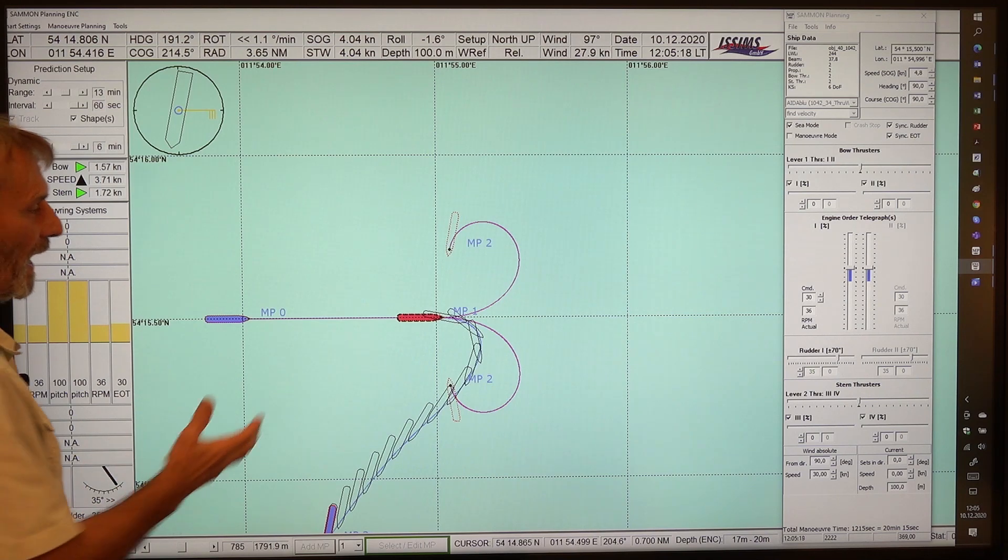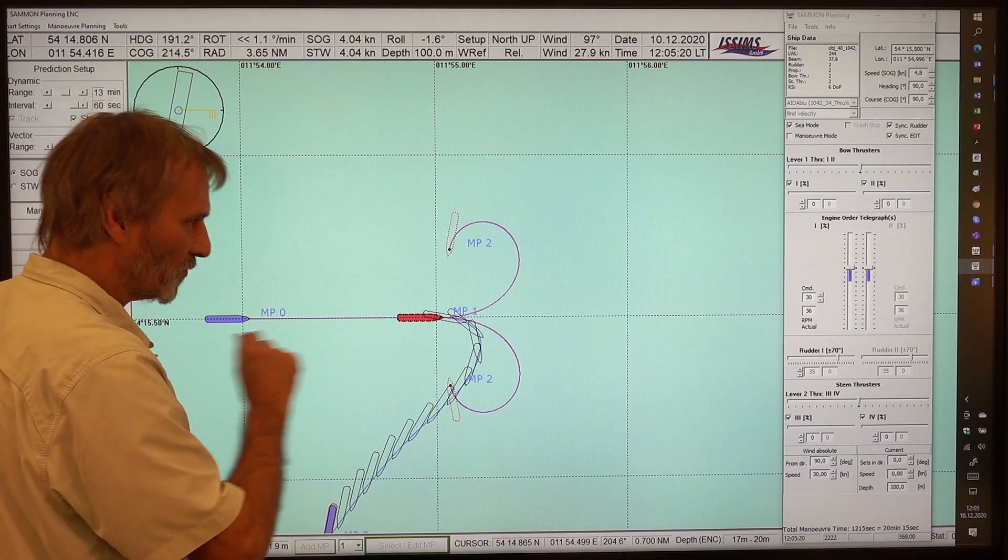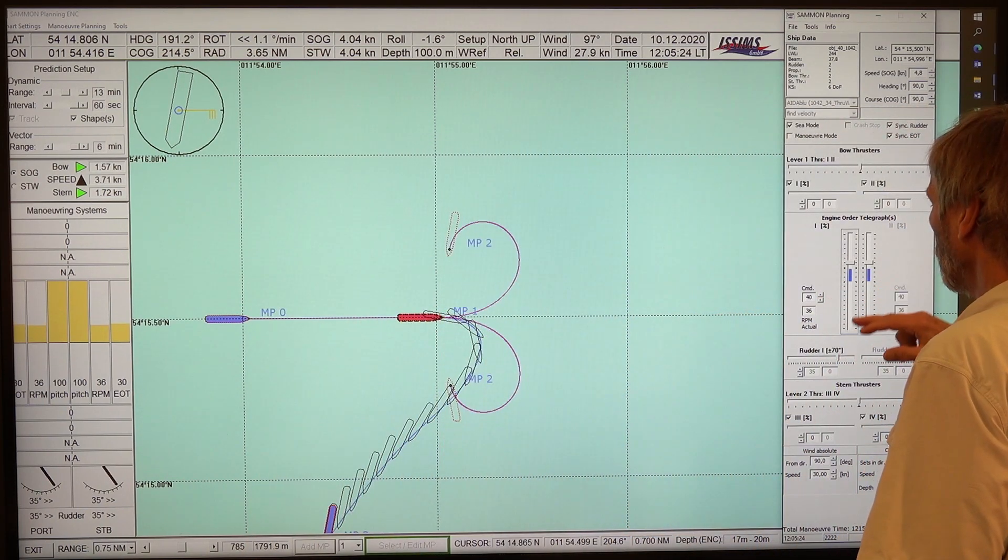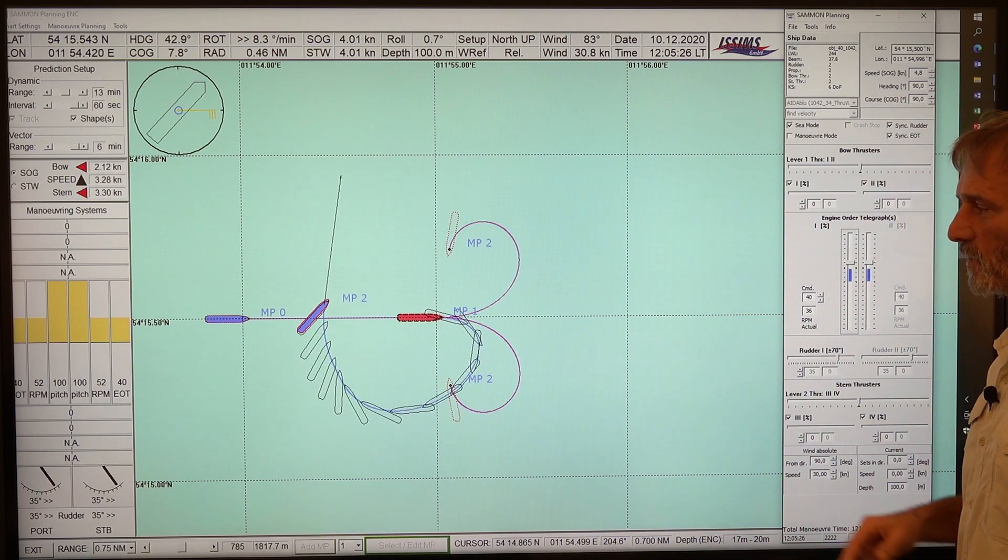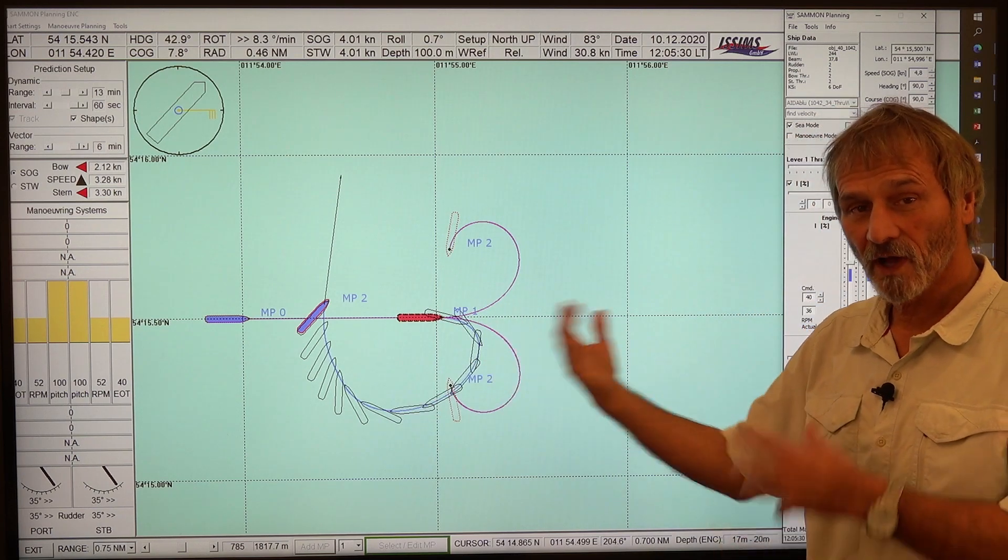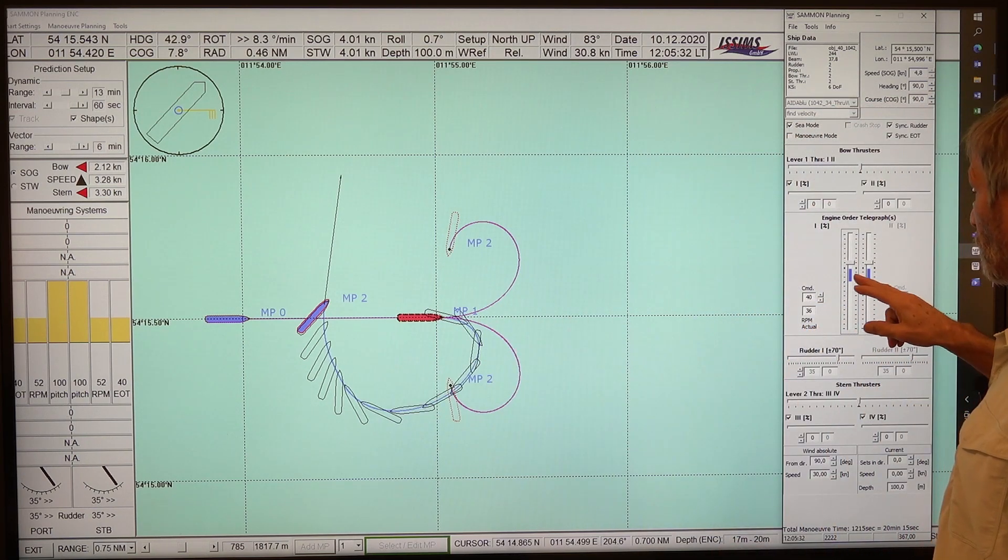we know already from our investigations on the straight tracks that the ship is not able to turn here. So we would need either a higher speed to increase the engines, for instance, to go for 30%. Then we would see, okay, then we can finally make it. But still the advance is not as we had it before.